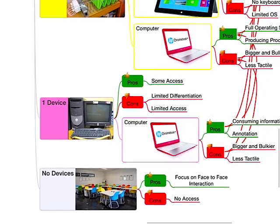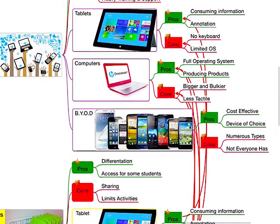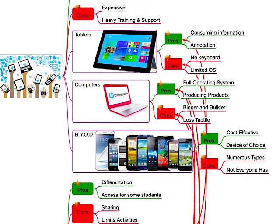Looking at the types of devices, perhaps just a quick overview of some pros and cons for each of them — some of these could maybe be arguable, but I think you can provide evidence from both sides. For tablets, I think tablets are really good for consuming information as well as annotation. They're also very portable. Some of the cons is some people have a problem with not having the full keyboard, and also most tablets have a limited operating system, which can limit the things that you can do.